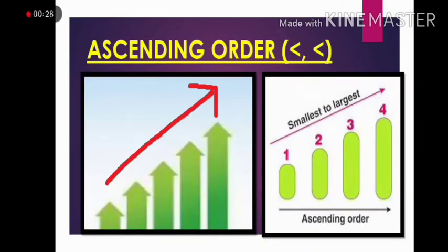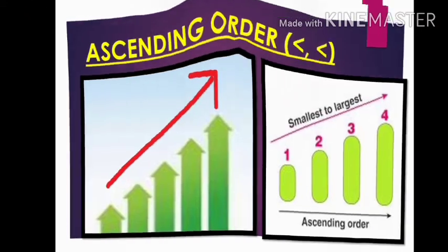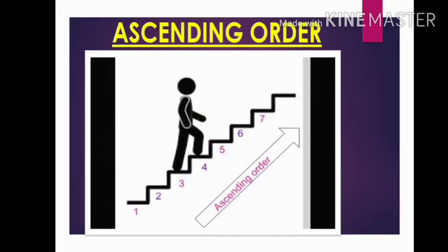In this picture we can see the arrow mark from down to top which means from smaller to larger numbers. In this picture you can see a person climbing the stairs from down to up which means from smaller to bigger number.